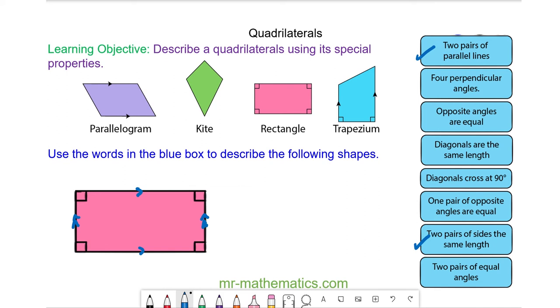It has four perpendicular angles. One, two, three and four. It has two pairs of equal angles here and you can see the diagonals are the same length. So this property as well.